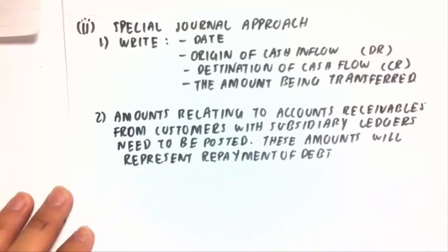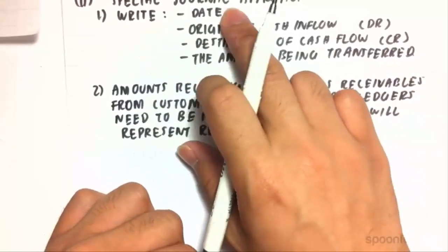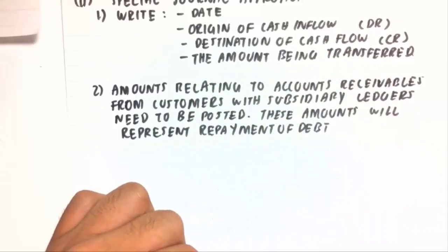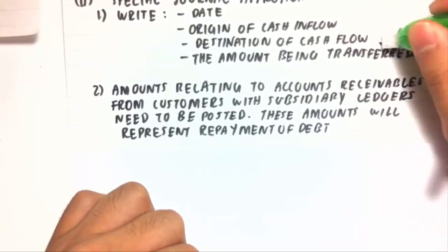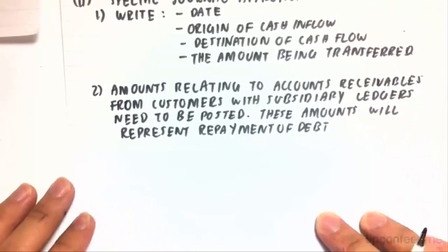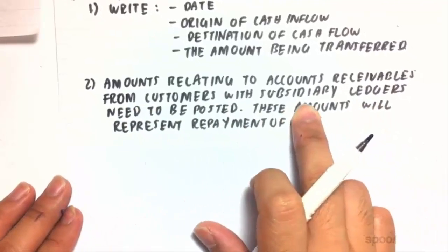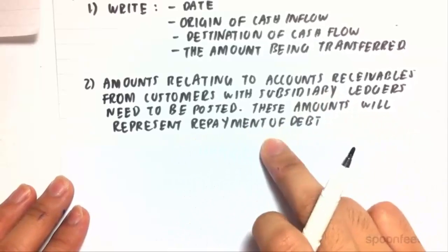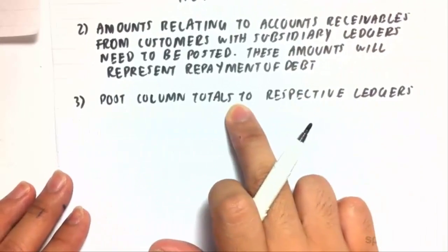So how do we actually use this special journal? Step one: write down the date, the origin of the cash inflow, the destination of the cash flow, and the amount of cash being transferred. Step two: amounts relating to any accounts receivable from customers with subsidiary ledgers need to be posted to their respective subsidiary ledger — these amounts represent the repayments made off the debt owed. Lastly, we need to post those column totals to respective general ledger accounts.